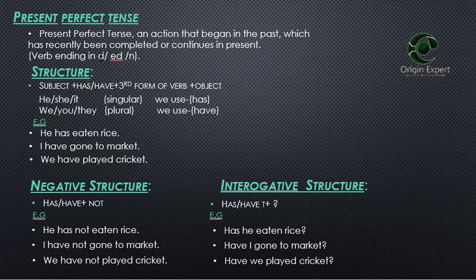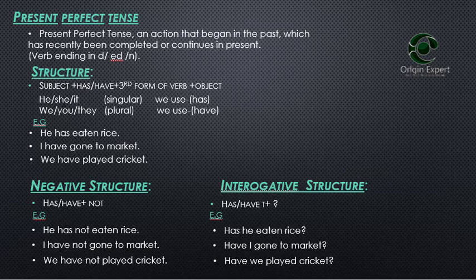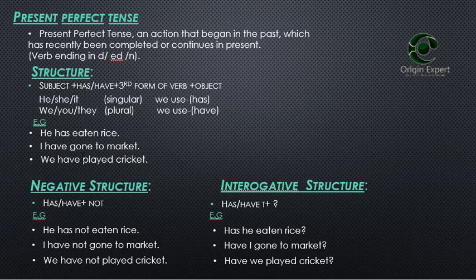Where do we use D and where ED? Eaten, we have played cricket. For the simple sentence structure: subject, verb, object. For example, 'he' as subject uses 'has', while 'we' as subject uses 'have'.